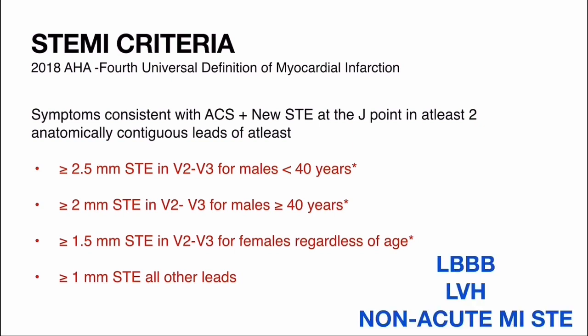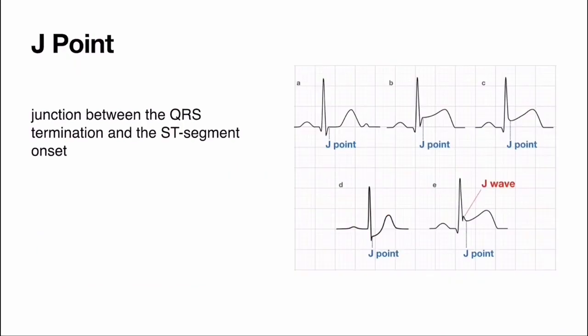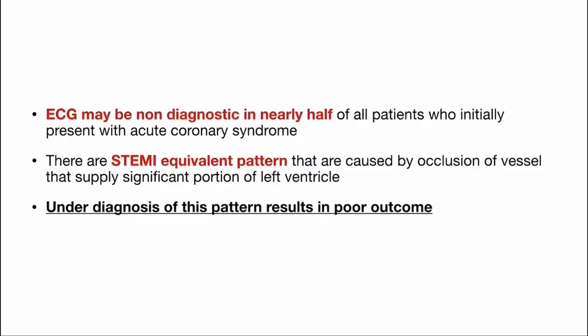These findings should occur in the absence of left bundle branch block, left ventricular hypertrophy, and non-acute MI ST elevation conditions like hyperkalemia. The J-point is the junction between QRS termination and ST segment onset. Importantly, ECG may be non-diagnostic in nearly half of all patients who initially present with acute coronary syndrome. There are STEMI equivalent patterns caused by occlusion of vessels supplying a significant portion of the left ventricle — under-diagnosis of these patterns results in poor outcomes. In this video, we will discuss 5 ECG patterns; the rest will be covered in the upcoming video.